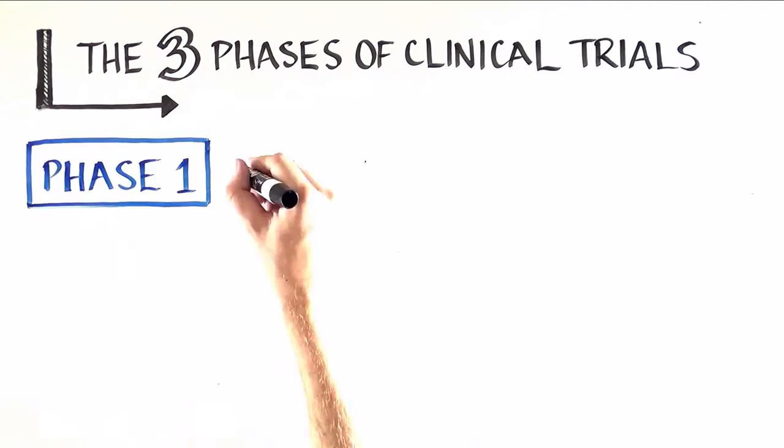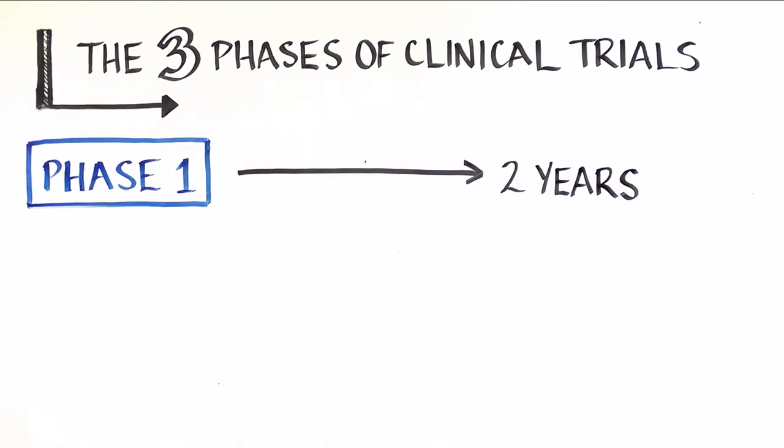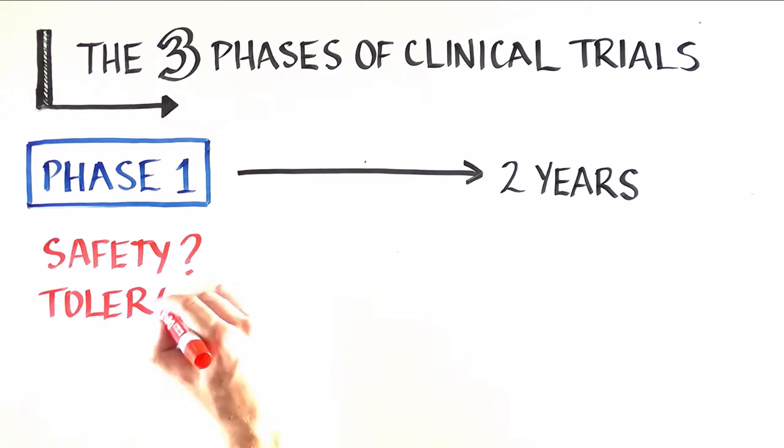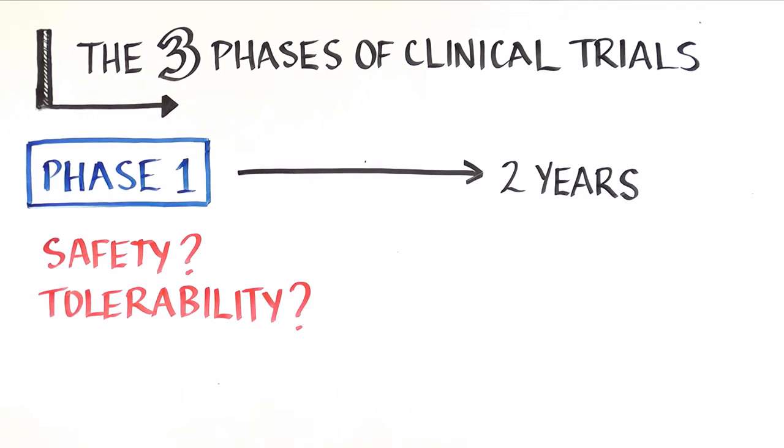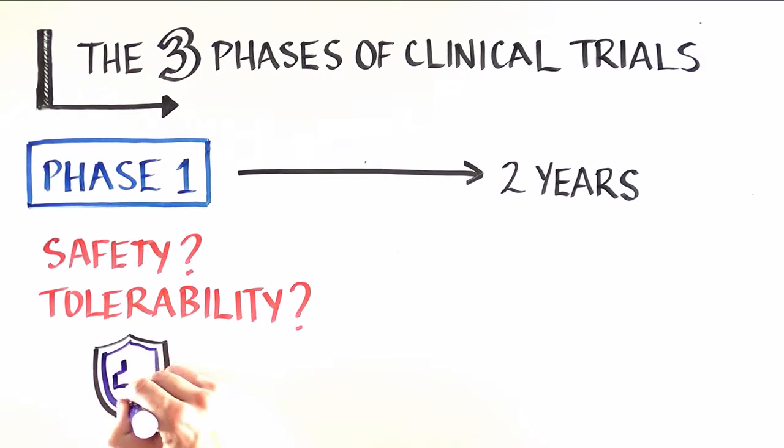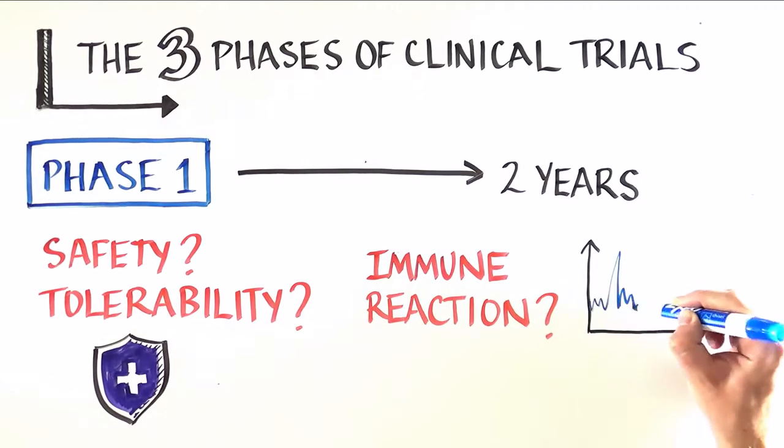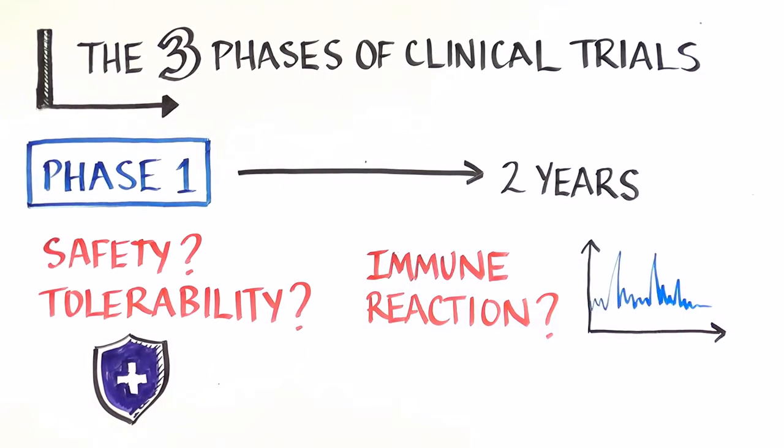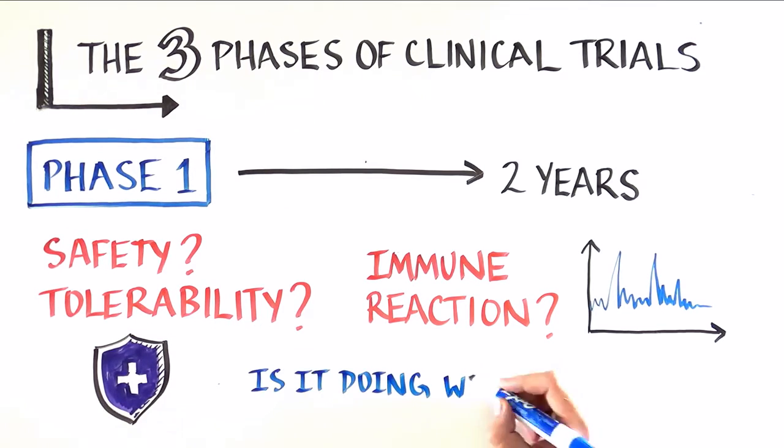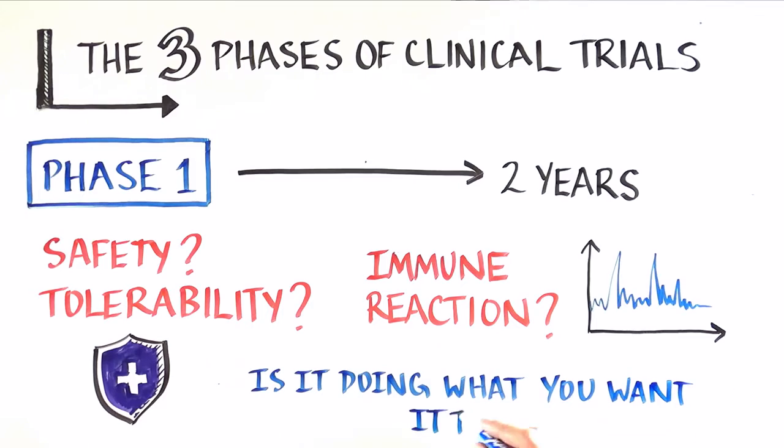Phase 1 trials, which can last up to two years, compare the safety—does the vaccine cause any side effects—and tolerability—does the injection hurt, and for how long. In this phase of studies, scientists are also gathering information about the body's immune response to the vaccine, to see whether it is a promising approach to preventing the specific infection. Phase 1 trials do not determine whether or not the study product is actually doing what we hope it will do.